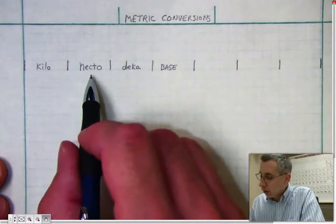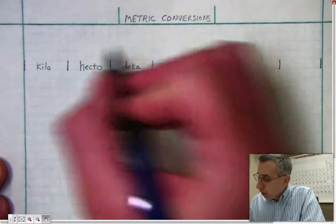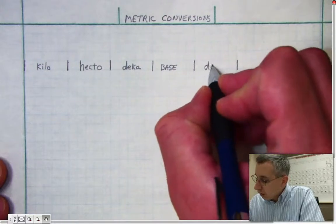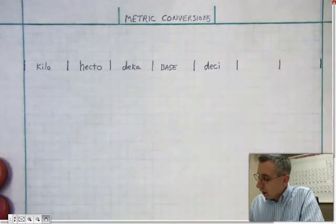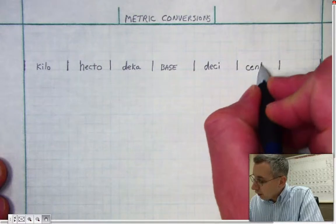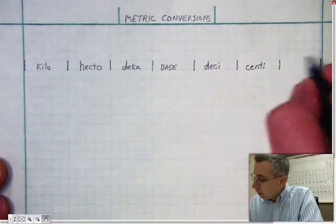Alright, so Kilo, Hecto, Deca, the base unit. Next is Deci, D-E-C-I, Centi, and Milli.